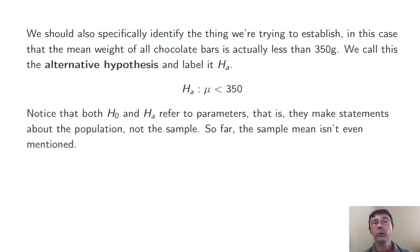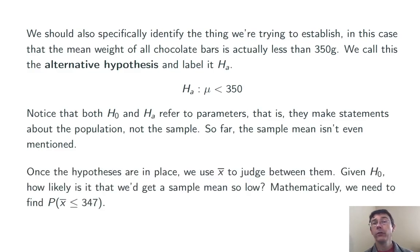Let's explicitly note that both H naught and HA refer to parameters. These are numbers describing the population, not the sample. So far, we haven't even mentioned the sample mean X bar. And there's a good reason for that. We want to use the sample mean X bar to make a decision between H naught and HA.